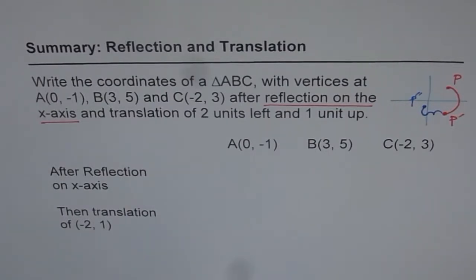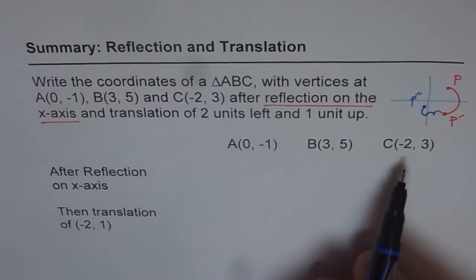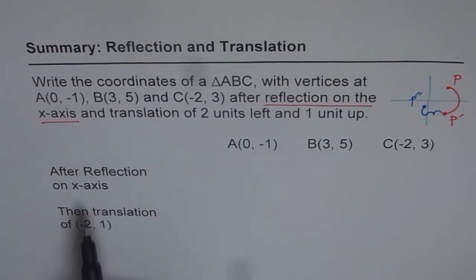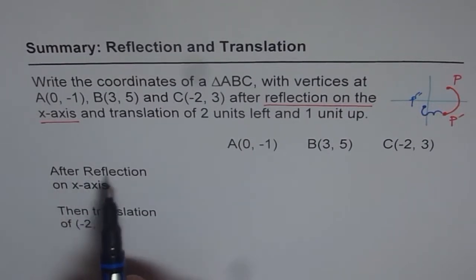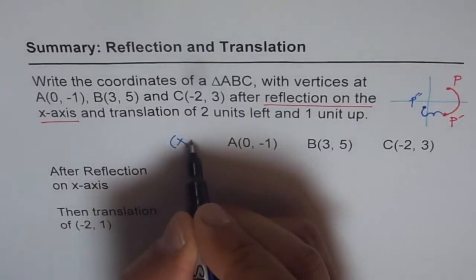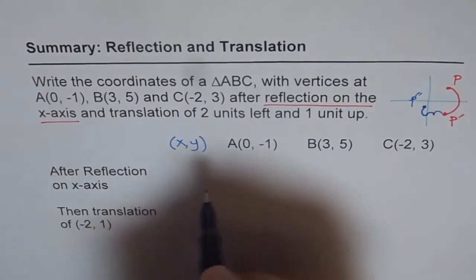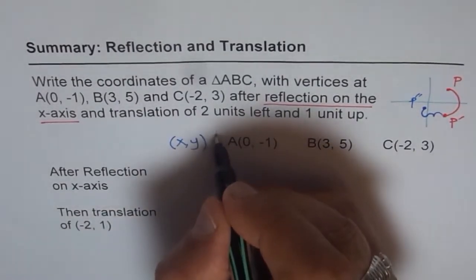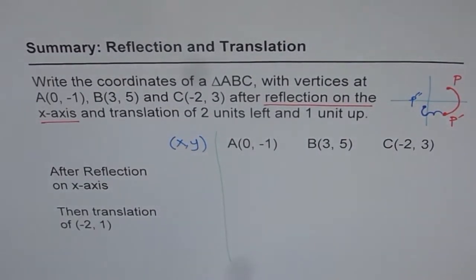So let us see how the points will get transformed one by one. So we will do it in two steps. In first step, we will see what happens after reflection on x-axis. And the second step, we will consider translation. So let us start with the original points. And let me say general point P for us is x and y. And we will write down the rule here on this side and we will apply the rule on the right side and write down our answer.